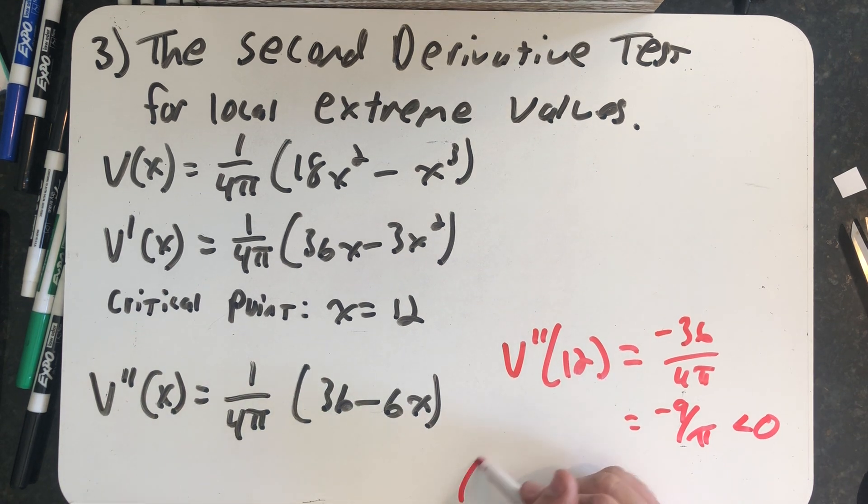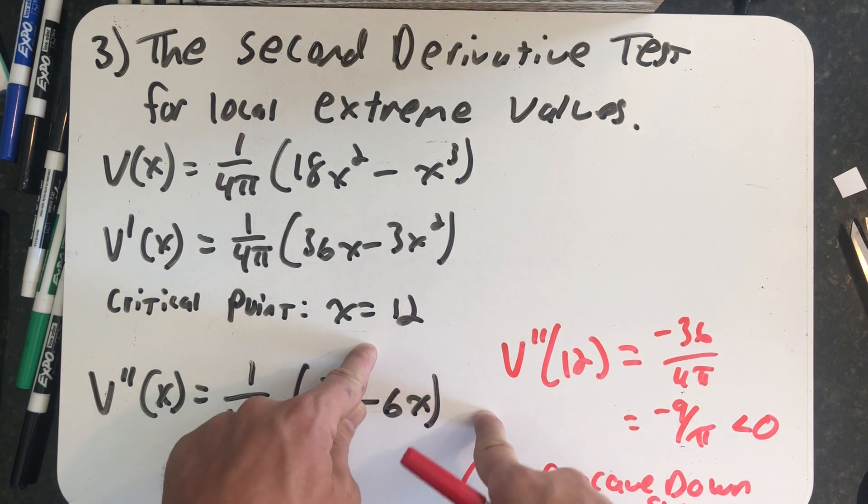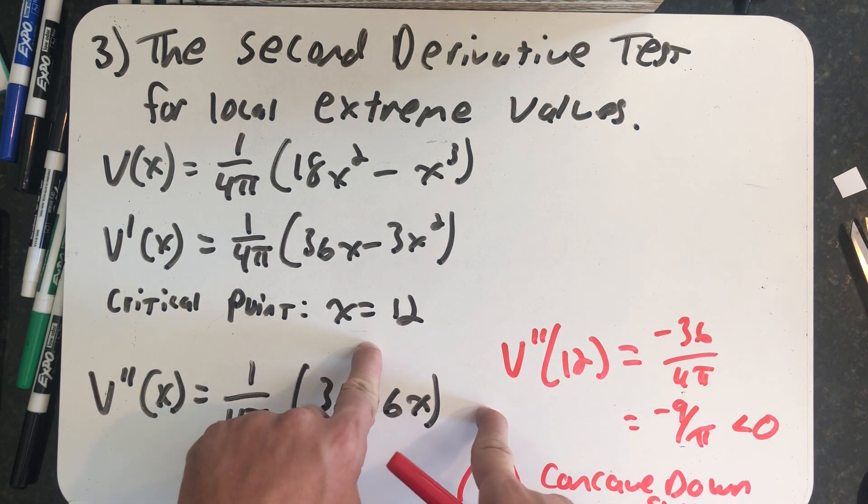That concave down shape means this critical point lies at the top, which makes that a maximum value.